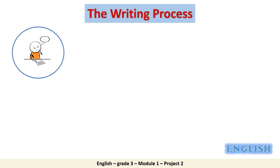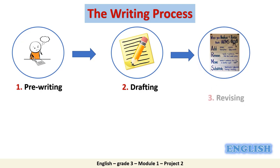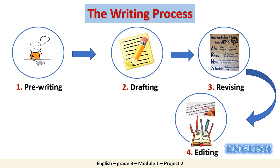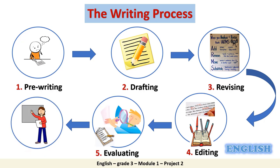Before we start, let me explain to you the writing process. The first step is called pre-writing, where you think about the topic, brainstorm and plan. The second step is drafting, where you quickly put your thoughts on paper. The third step is revising, where you try to improve your writing by re-working on the details. The fourth step is editing, where you review and correct spelling, grammar, capitalization, and punctuation. The fifth step is evaluating, where you assess what has been written. And finally, publishing, where you share your final writing with others.